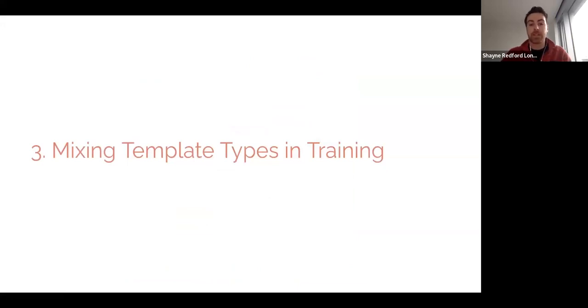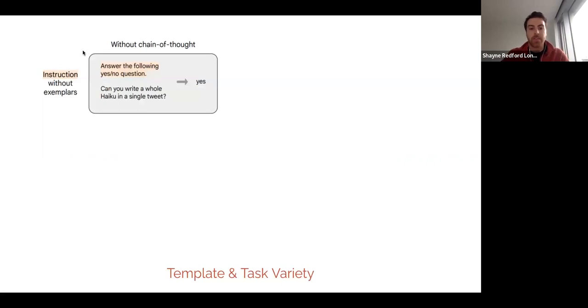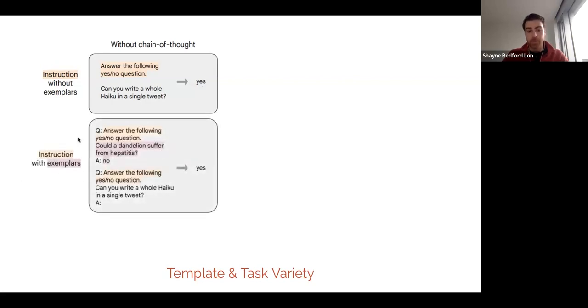The third thing that we explore is mixing template types at training. So I'm going to show you what this means. Given the same dataset, you can formulate it with different templates. So here we see a zero-shot template that is not chain of thought. So there's no exemplars. It just says, here's the instruction in orange. Can you write a whole haiku in a single tweet? And it's asked to generate the answer, yes or no. In this case, yes. This same example could be templatized in a few-shot setting where a different exemplar is provided first, and then the same example in the first part is provided here. So this first exemplar helps the model see the pattern of how it's supposed to respond to the question. And so this is a few-shot templatized example of this same zero-shot version.